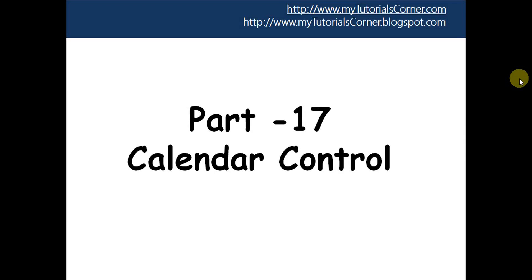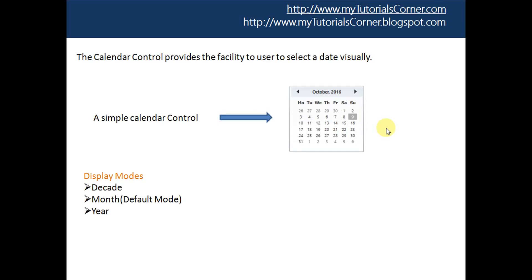Hello guys, welcome to my Tutorials Corner. My name is Abhi and this is part 17 of the WPF tutorials video series. In this video we are going to learn about the Calendar control in WPF. The Calendar control provides the facility for the user to select a date visually. It comes with different controls on it, and using these controls the user can navigate to any year or month and then select the desired date. It also provides different facilities by which we can restrict the end user to only select a date between a given range of dates.